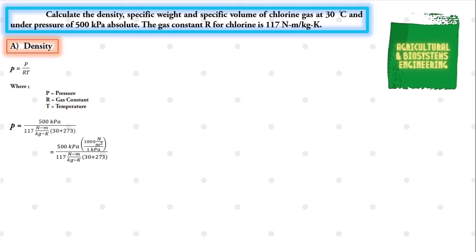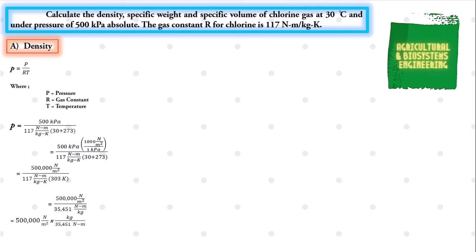After converting, we have density equals 500,000 newton per square meter over the product of the gas constant 117 newton·meter per kilogram·kelvin and the converted temperature of 303 kelvin. Solving gives 500,000 over 35,451, which we evaluate by multiplying by the reciprocal of the denominator, yielding a final density of 14.10 kilogram per cubic meter.